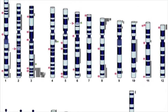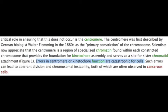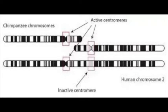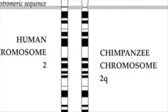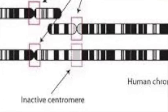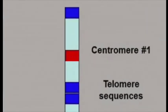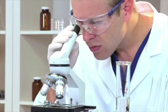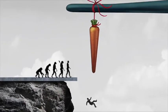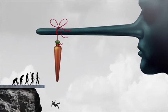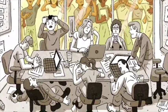We also know errors in centromeres are catastrophic for cells. So if the ape chromosome fused with a human one, it would have left two active centromeres on human chromosome 2 — but there's only one. Evolutionists have to say the 2p centromere remained active whereas the 2q centromere was inactivated. By assuming this centromere deletion model they have already concluded that the fusion event is true and did happen, and without question are just looking for explanations as to why the so-called dead centromere got this way.